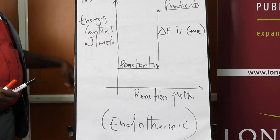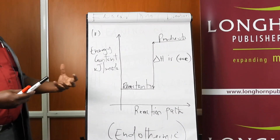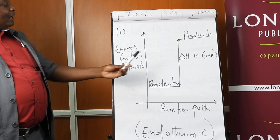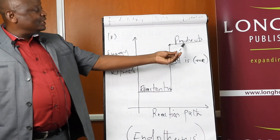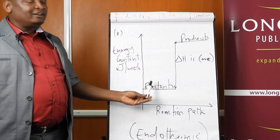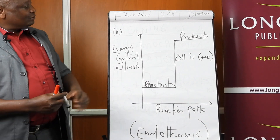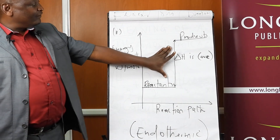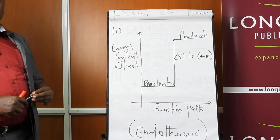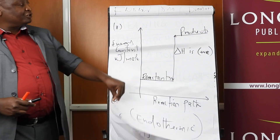Similarly, for an endothermic reaction, energy has been gained into the system, implying that the products now have more energy than the reactants, so delta H will have a positive sign. This is the energy level diagram for an endothermic reaction.